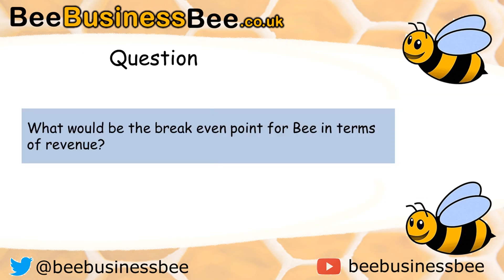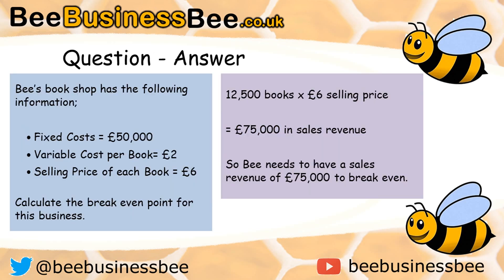It doesn't stop there. The question could also ask you to work out the break-even point in terms of revenue — how much revenue will B need to achieve to break even? Using your break-even point of 12,500 books, and knowing each book sells at £6, simply multiply the number of books by the selling price: 12,500 times £6 equals £75,000. That is the sales revenue B needs to achieve to break even.